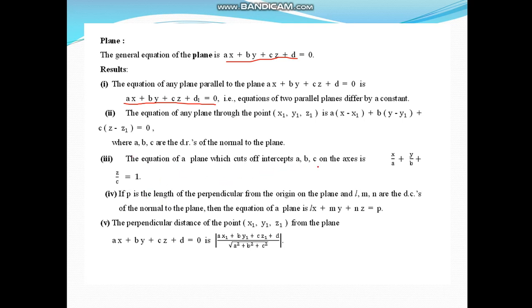Next is the equation of a plane which cuts off intercepts a, b, c on the coordinate axes. It is given by x/a + y/b + z/c = 1. Perpendicular distance is given by this formula. We can find perpendicular distance of a point from the plane.